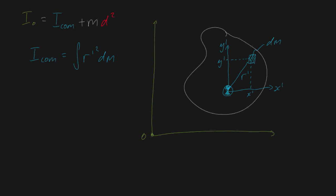First things first, we need to define what we mean by this axis. So we need to call this x and we need to call this y, keeping it as generic as possible. We know that the moment of inertia about point O is just going to be the integral of r squared dm, where r is going to be the distance from point O towards your small element of mass dm. It's going to have a horizontal distance x and a vertical distance y.